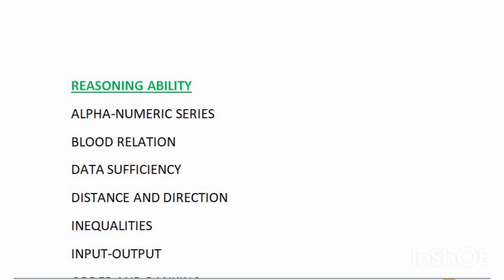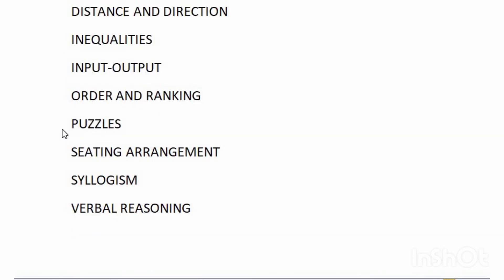In the Reasoning Ability section, the topics covered are alphanumeric series, blood relation, data sufficiency, distance and direction, inequalities, input-output, order and ranking, puzzles, seating arrangement, syllogism, and verbal reasoning.